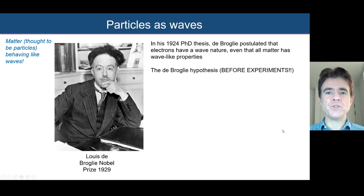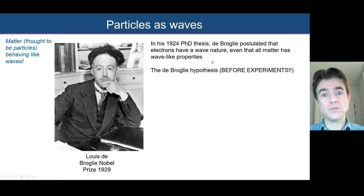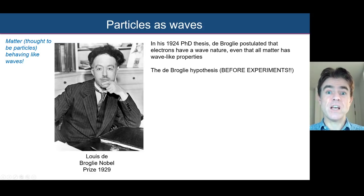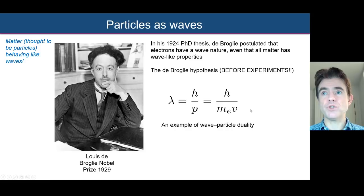Before these experiments were done, back in 1924 in his PhD thesis, Louis de Broglie, a French physicist, postulated that electrons behave like waves — and in fact that all matter has wave-like properties. Just like photons, previously thought to be just waves, had been shown to be particles, de Broglie did the opposite and considered electrons, conventionally regarded as particles, as also behaving like waves. He put forward the hypothesis that the wavelength of a particle of mass M and velocity V is given by Planck's constant divided by the mass times velocity — in other words, divided by the momentum. This is an example of wave-particle duality, and he received the Nobel Prize for this in 1929.